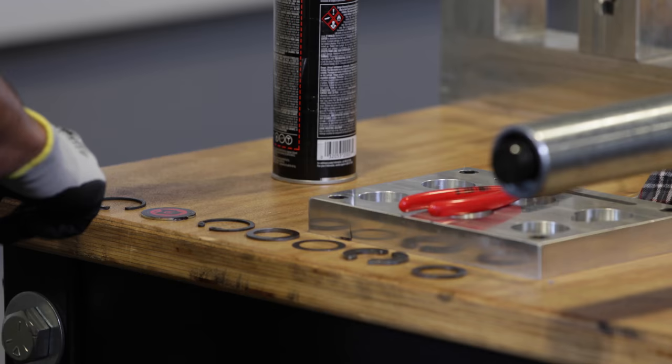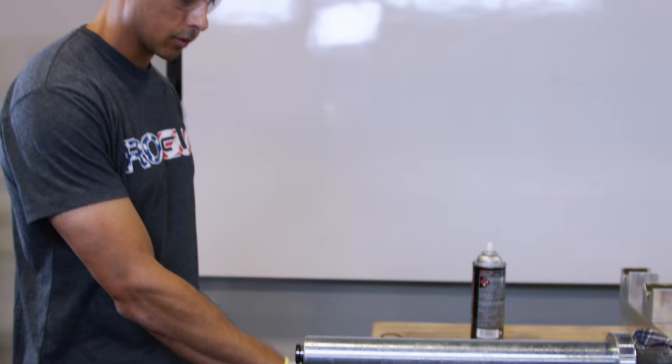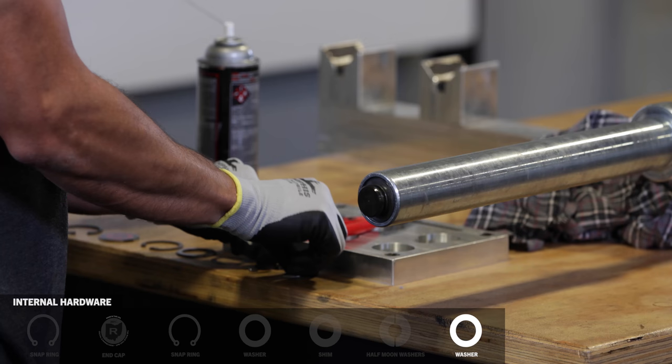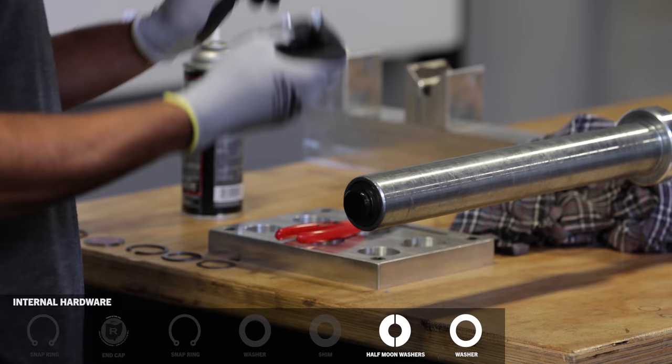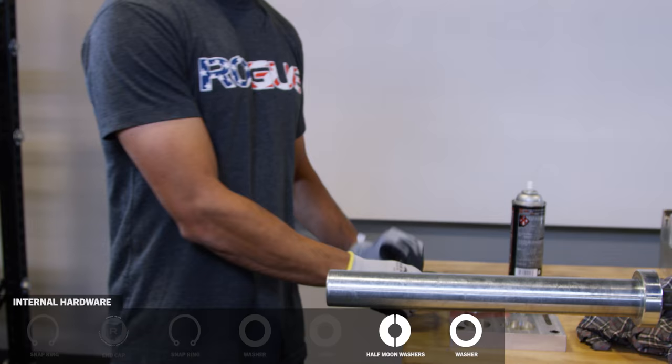And as you see, I put all my hardware in a row to make it easy to get everything back in the correct order. First, it's going to be a full washer. Then your two half moon washers are going to fit into the groove on the end of the shaft. You're going to hold them in place and slide the sleeve back over.